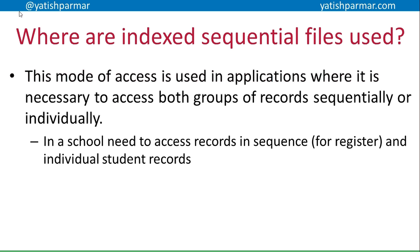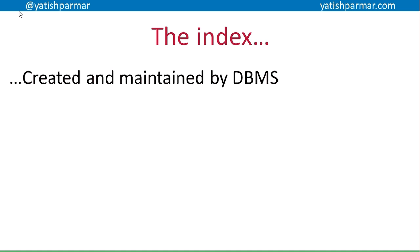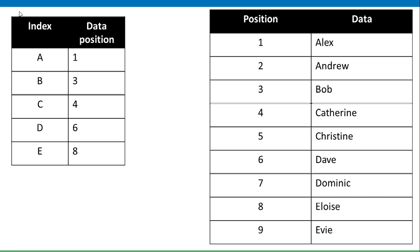Why would you use an index sequential file? Basically, if you need to access both groups of records sequentially or individually, you'll be able to get to them quickly. For example, we might want to access records in sequence in a school for a register, but we might also want to access an individual student's record quickly to update some particular data. The index is created and maintained by a database management system.